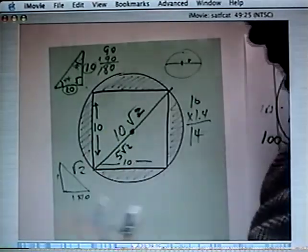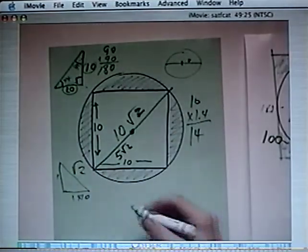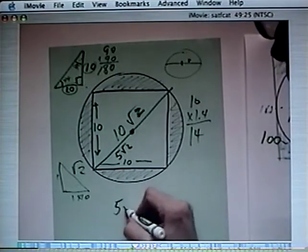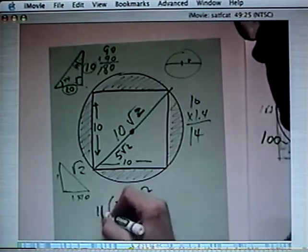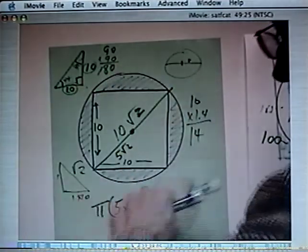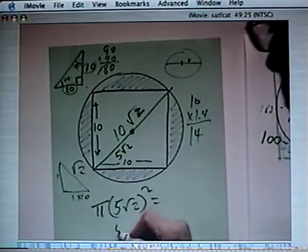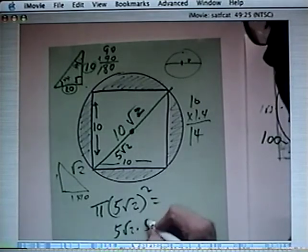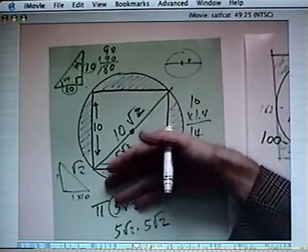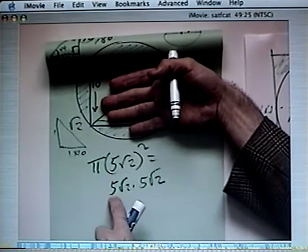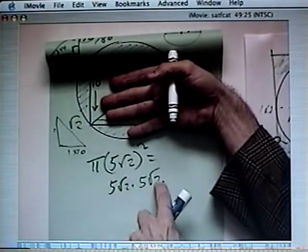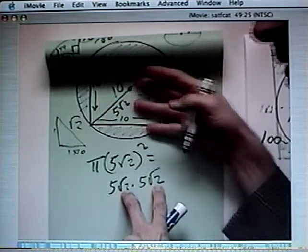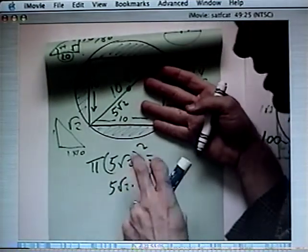Now we can get the area of the full circle by saying 5 root 2 squared times pi equals the entire thing, which is 5 root 2, 5 root 2. When we multiply, 5 times 5, that's 25. Root 2 times root 2, and you put those two together and make 2.